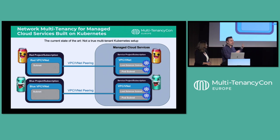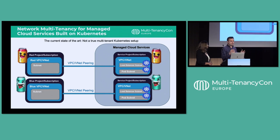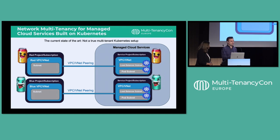This is really the state of the art for how network multi-tenancy is implemented for cloud services today. In GCP, Azure, and AWS, cloud services are built so that each service project has a dedicated Kubernetes cluster. This project or subscription gets linked with the customer's project via VNet or VPC peering. This is very secure because there's only a direct link between the customer's environment and the service, but the downside is there's really no sharing — each tenant has their own dedicated Kubernetes cluster.